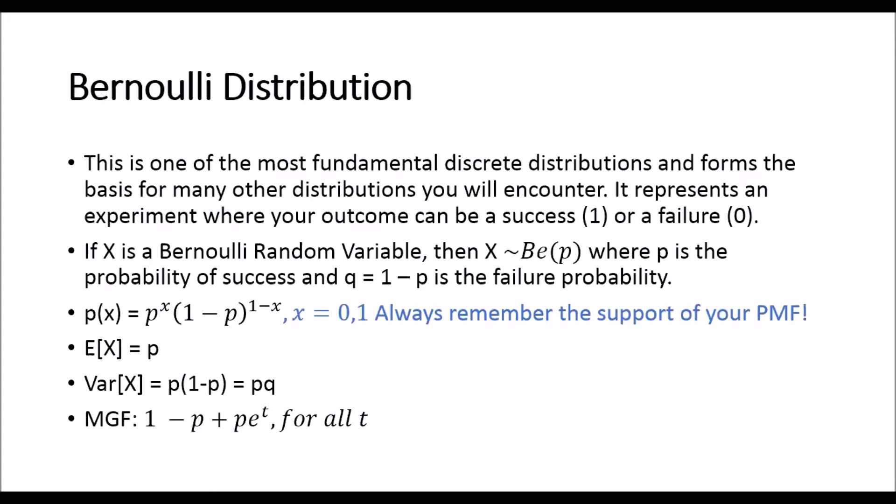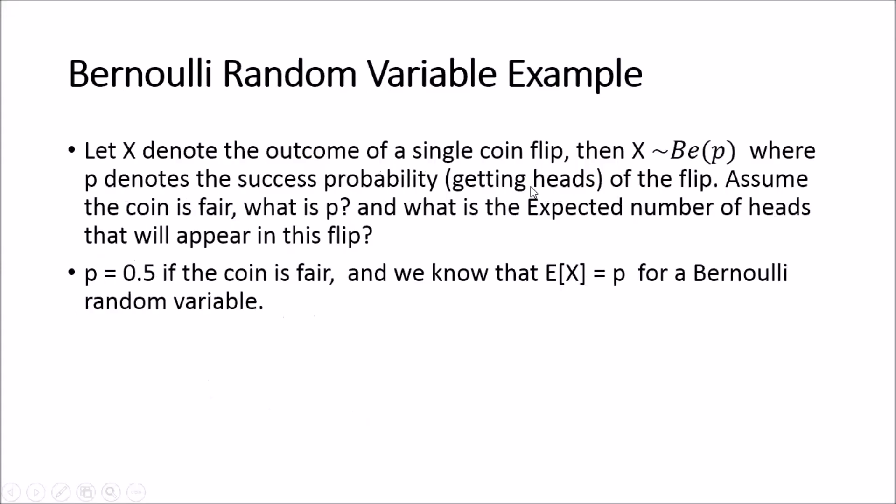So let's look at an example. A Bernoulli random variable X denotes the outcome of a single coin flip. Then we will say that X is distributed as a Bernoulli distributed random variable with success probability p. And we let this success probability p denote the probability of getting a head on a coin flip.